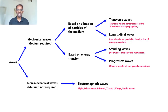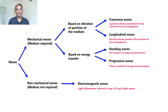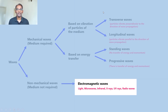In one of the lectures, you have seen the classification of wave motion. Waves are classified into mechanical waves and non-mechanical waves. Mechanical waves are those waves which require a material medium for their propagation, whereas non-mechanical waves do not require a material medium for propagation. Electromagnetic waves are examples of non-mechanical waves.